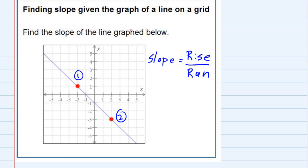The rise part is the up and down. To get from one to two, I would actually have to go down one, two, three, four spots to get from one to two, so my rise is actually a negative four because it's down.